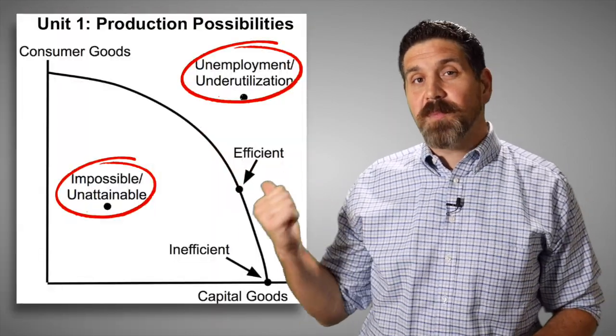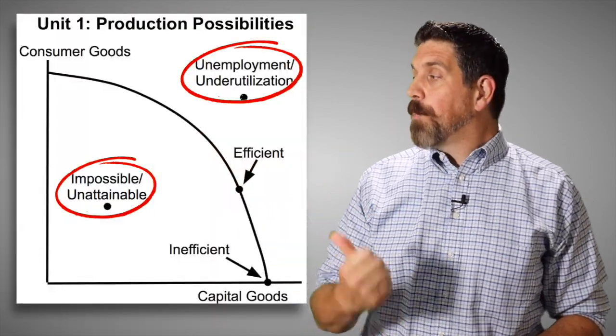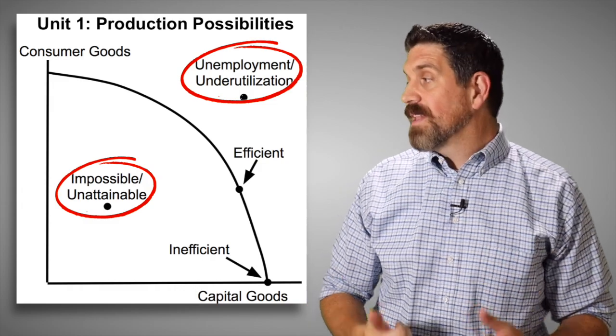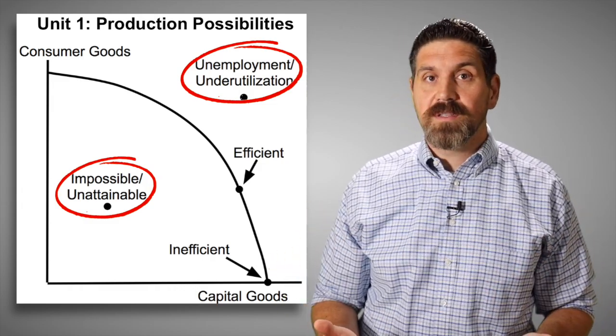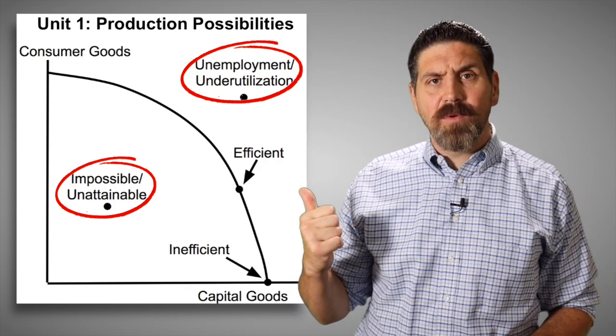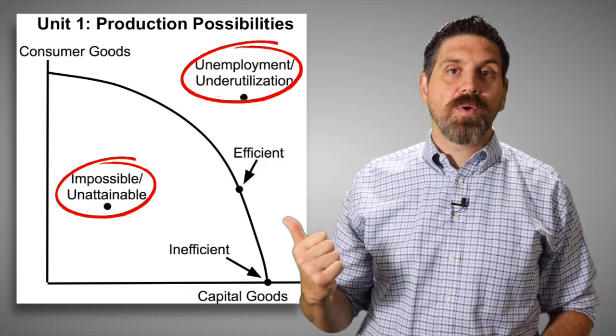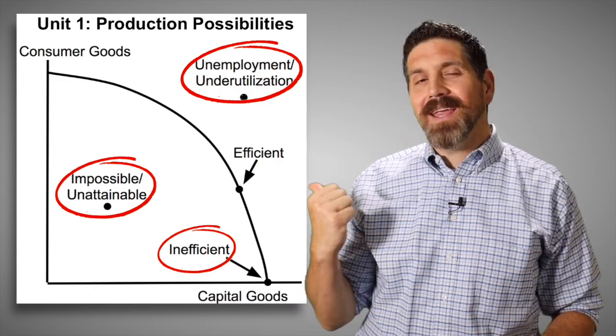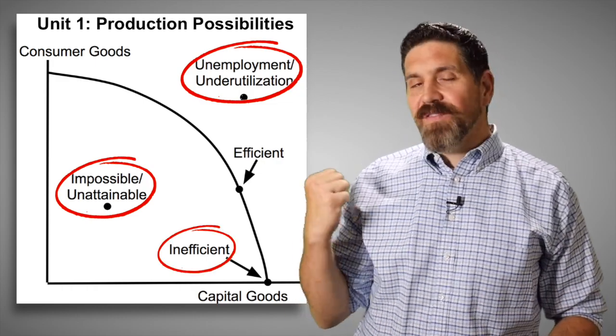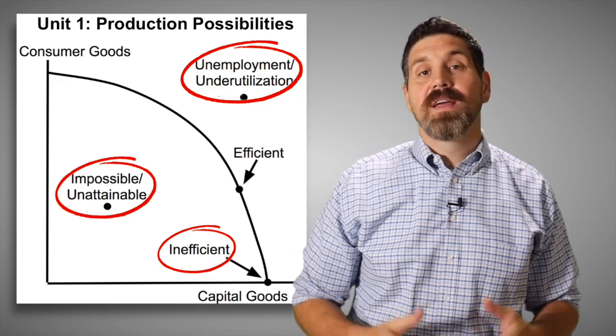For the first one, the production possibilities curve, there's three mistakes. A point in the curve is not impossible. It's definitely possible, it's just inefficient or underutilization of our resources. And a point outside the curve is unattainable or impossible given our current resources. And any point on the curve is efficient. So inefficient right here, that's wrong. That is not inefficient. A point inside the curve is inefficient.